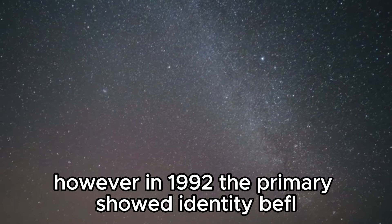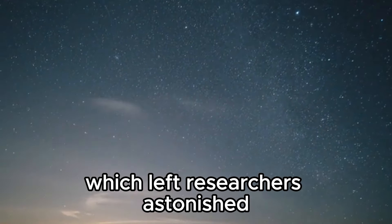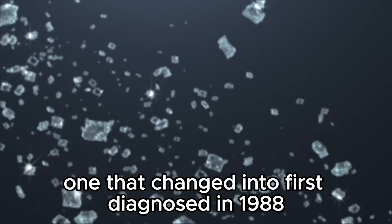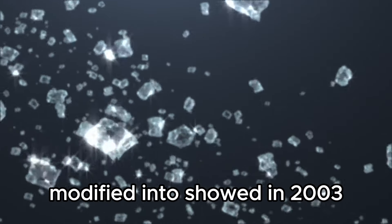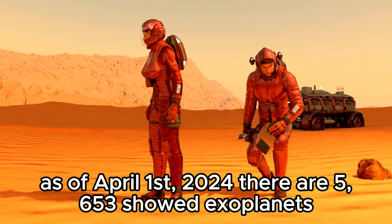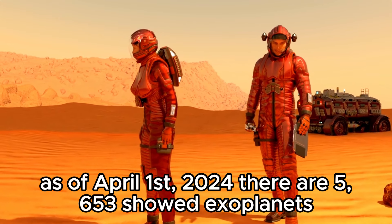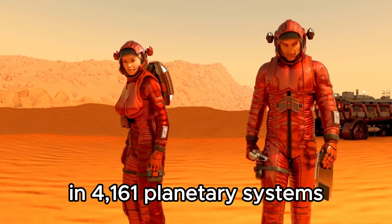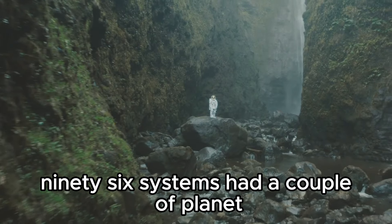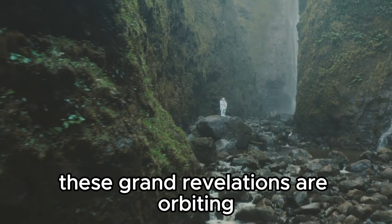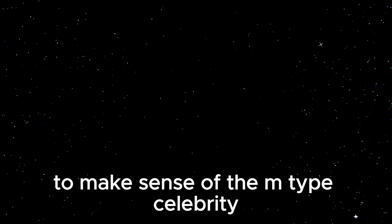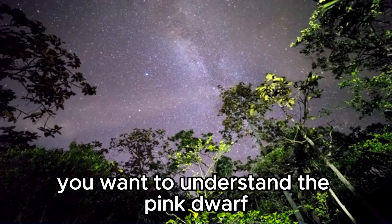Another exoplanet, one that was first identified in 1988, was confirmed in 2003. As of April 1st, 2024, there are 5,653 confirmed exoplanets in 4,161 planetary systems. Out of these, 896 systems had multiple planets. These grand revelations are orbiting an M-type star. To make sense of the M-type star, you need to understand the red dwarf.